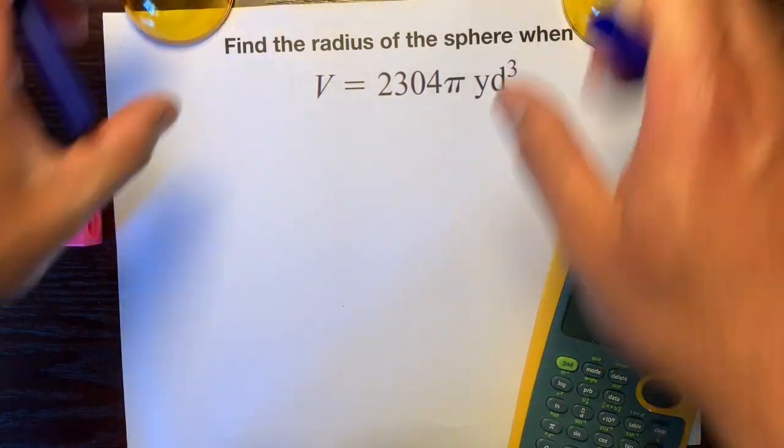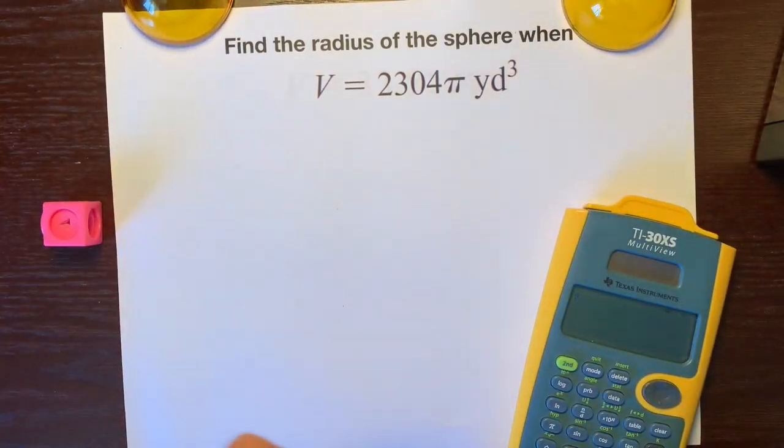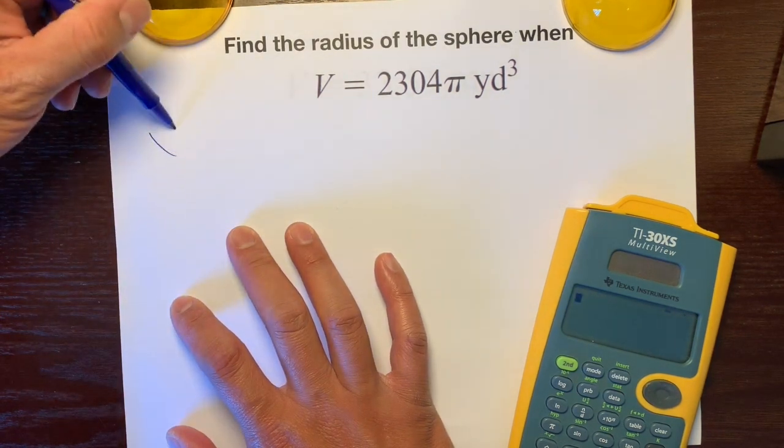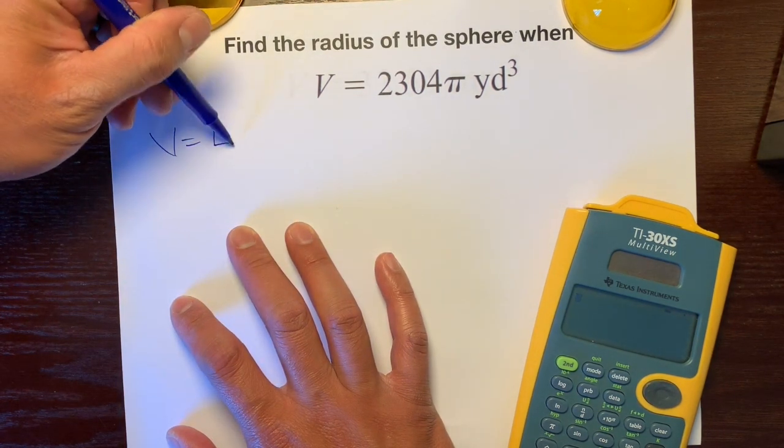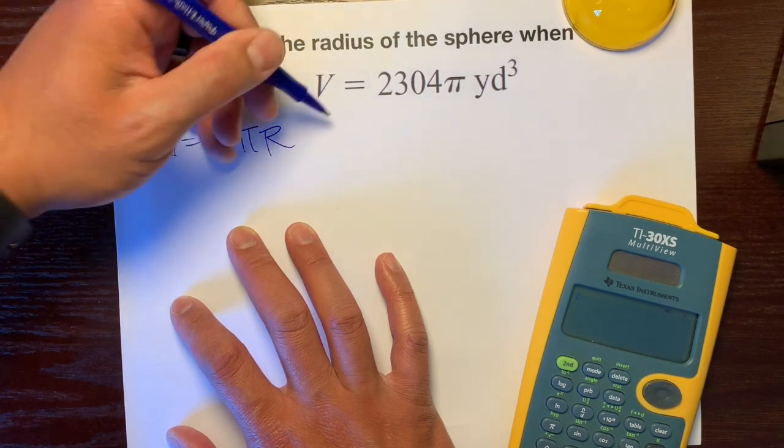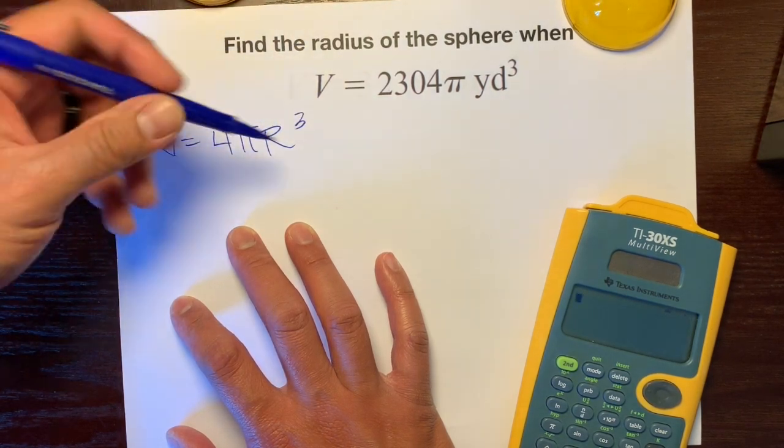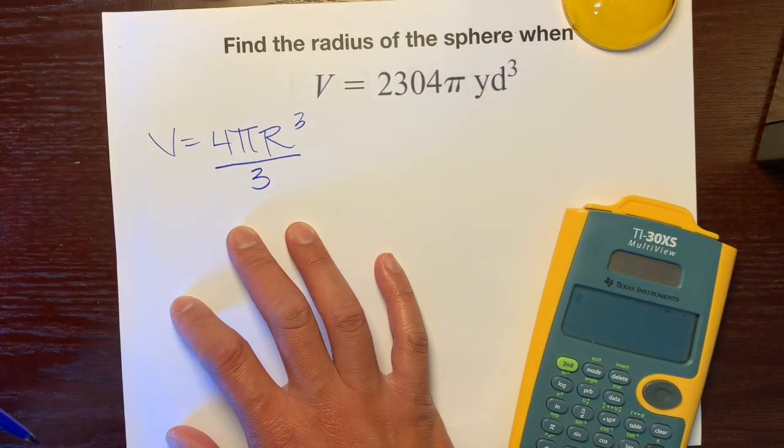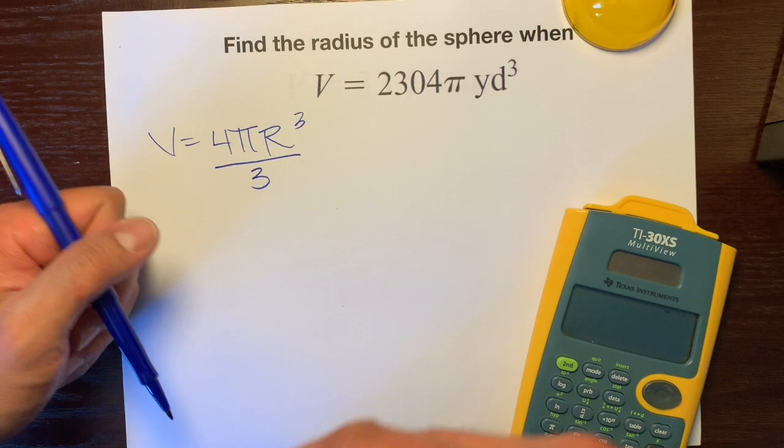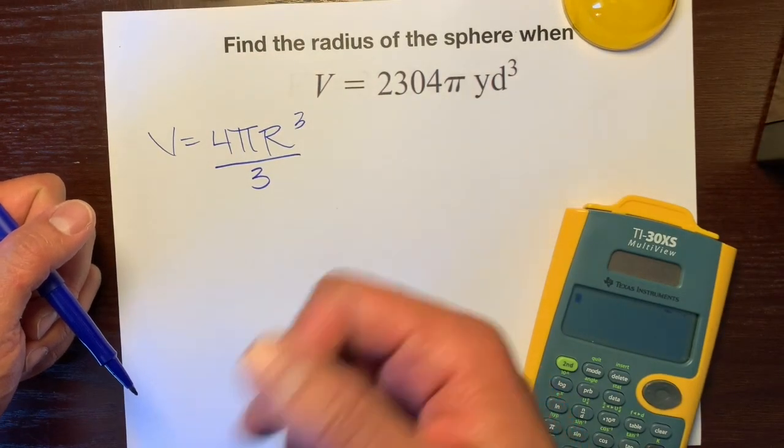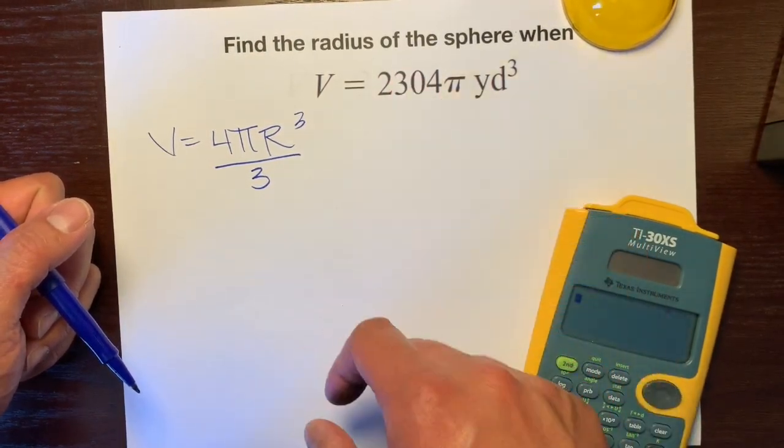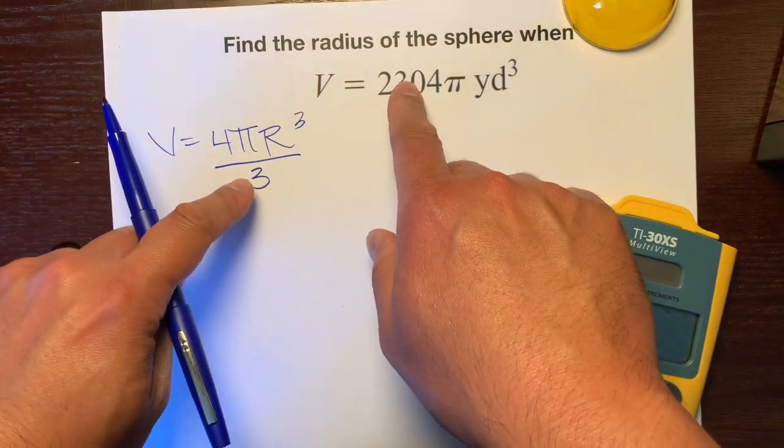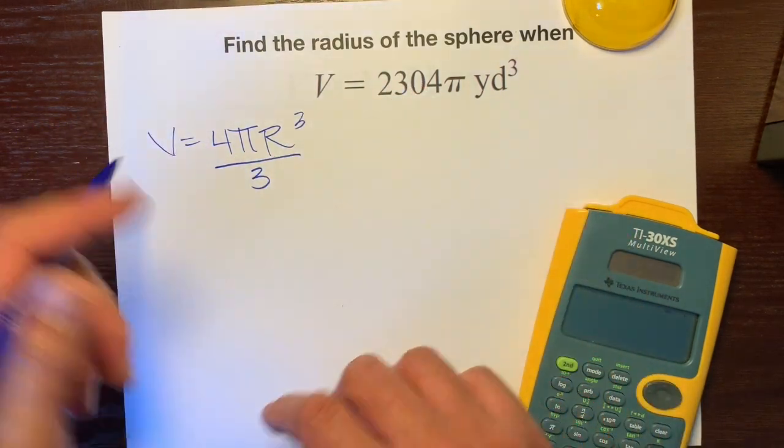So we need the formula for the volume of a sphere. Volume equals 4πr cubed over 3, because it's a volume. We're going to use this formula to get the radius from this value. Both of these equal the volume, so we can set these equal to each other.